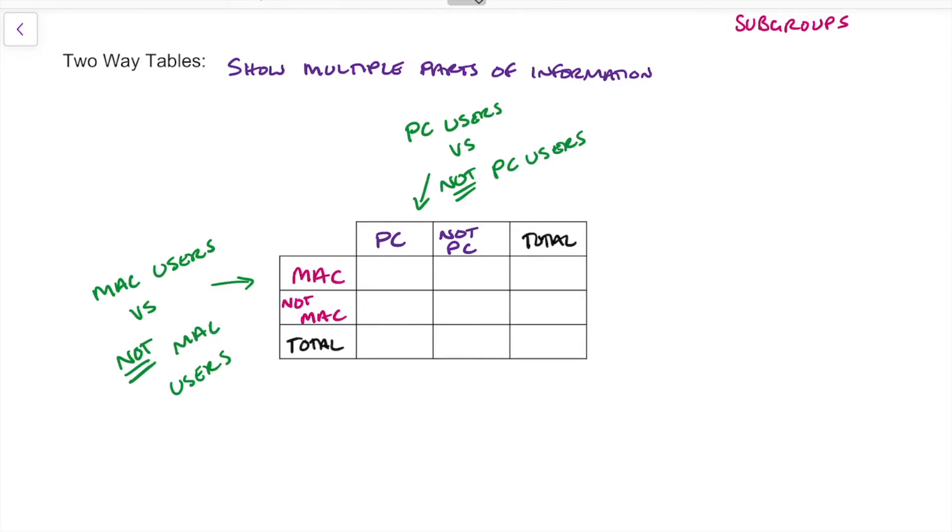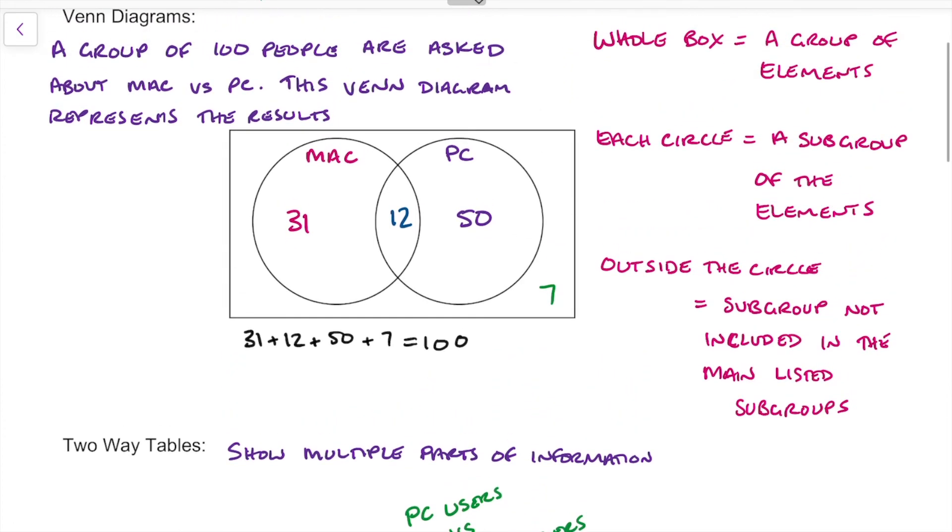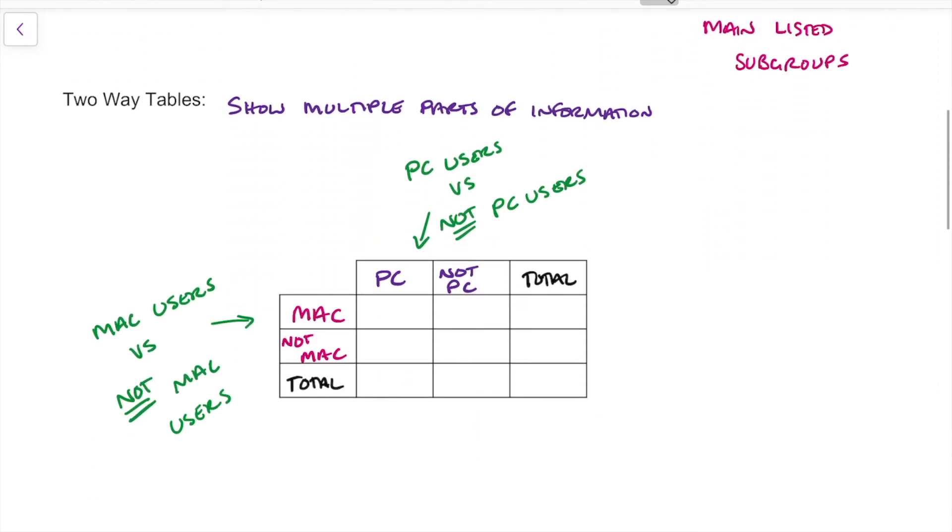So our Mac users, we had Mac and PC users, that's our little intersection here, is going to be 12. So where the columns and rows intersect, that's going to be that particular piece of information. So Mac users who don't use PC, there's 31 of those.